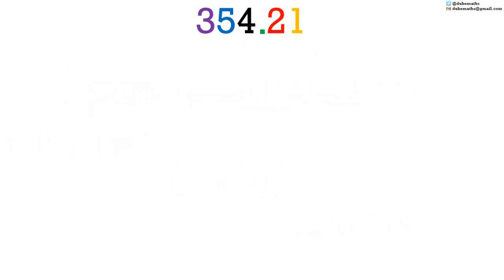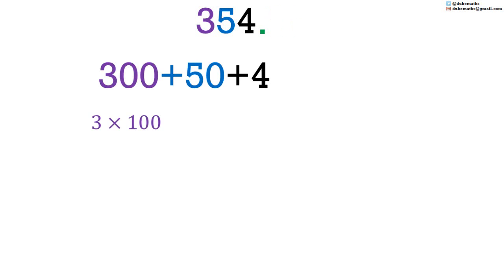Now the decimal point is written but it isn't at the end. Let us forget those numbers to the right of the decimal point so that we have a number similar to what we saw before. That is 300 plus 50 plus 4: 3 multiplied by 100 plus 5 multiplied by 10 plus 4 multiplied by 1.